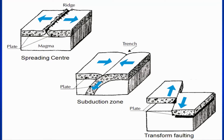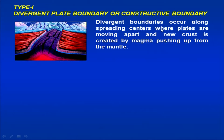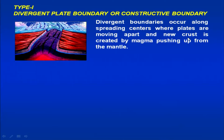In short: spreading center, divergent plate boundary, convergent plate boundary, subduction zones, and transform plate boundary where two plates slide past each other — only lateral or horizontal movement has been seen along the plate boundary. Divergent plate boundaries occur along spreading centers where plates are moving apart and new crust is created by magma pushing up from the mantle.